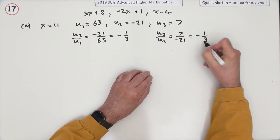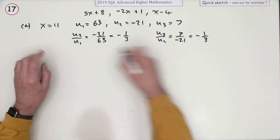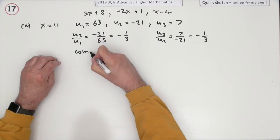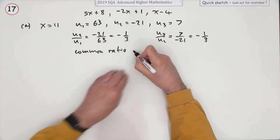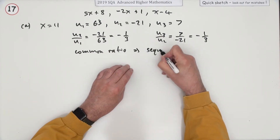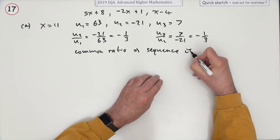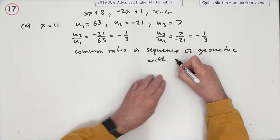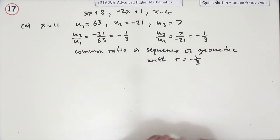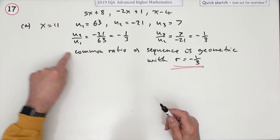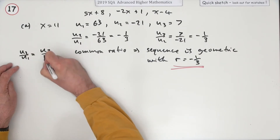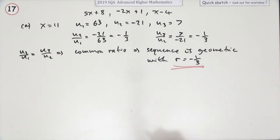Dividing u3 by u2: 7 over negative 21 also gives negative one third. So u2 over u1 equals u3 over u2, which means we have a common ratio, and therefore the sequence is geometric with r equals negative one third.